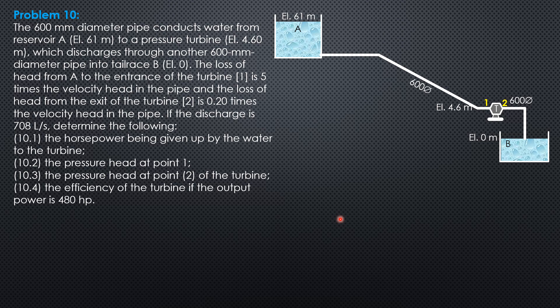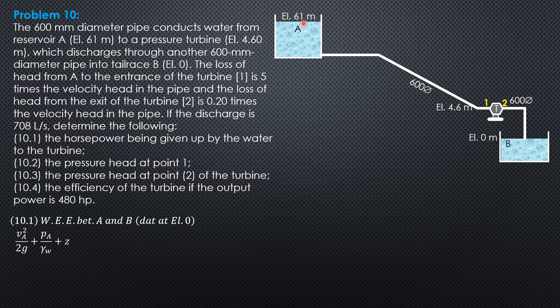We first write the energy equation between point A and point B on the water surfaces of the reservoir and the tail race, with datum at elevation 0. We have: velocity head at A, plus pressure head at A, plus elevation head at A, equals velocity head at B, plus pressure head at B, plus elevation head at B, plus head extracted by the turbine, plus head loss between A and B. Velocity head at A is negligible, or 0.